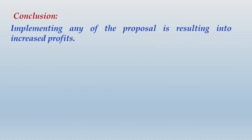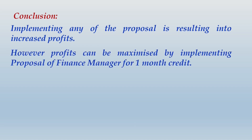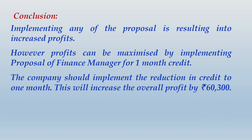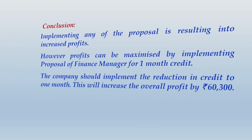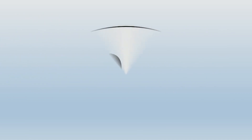Conclusion: implementing any of the proposals results in increased profits, however profits can be maximized by implementing the proposal of the finance manager for one-month credit. Therefore the company should implement the reduction in credit to one month. This will increase the overall profit by Rs. 60,300 as compared to the present level.